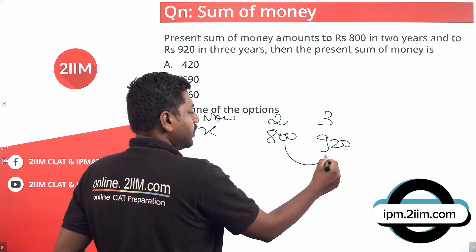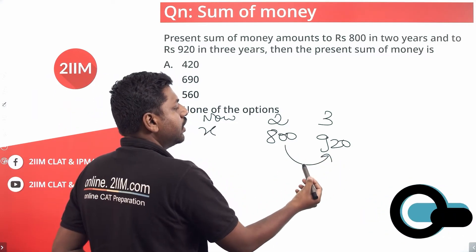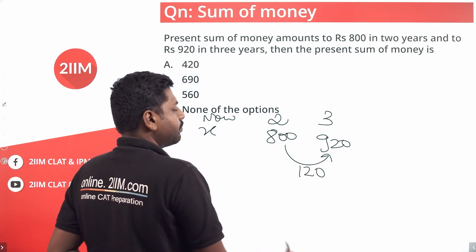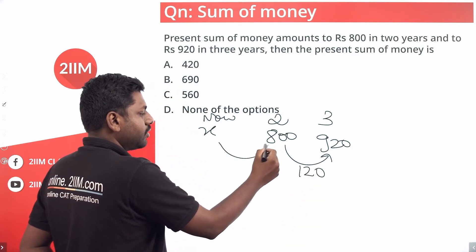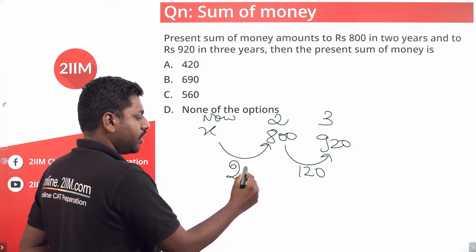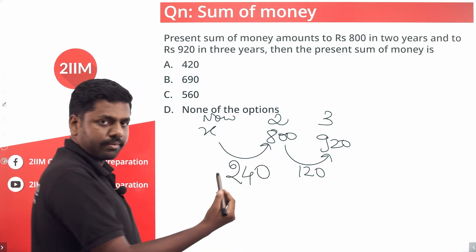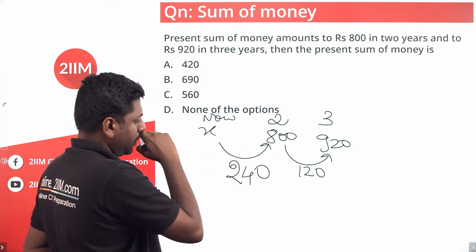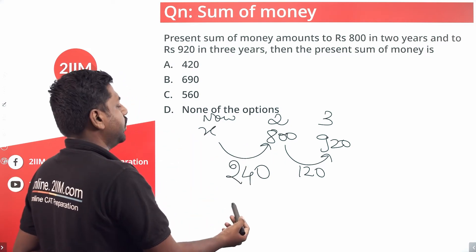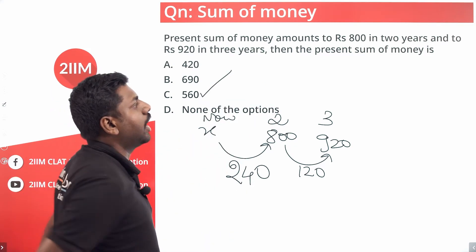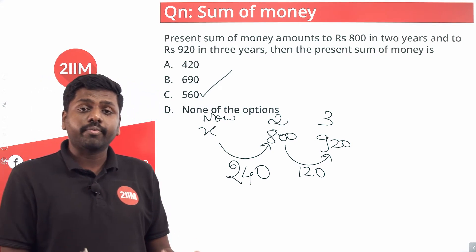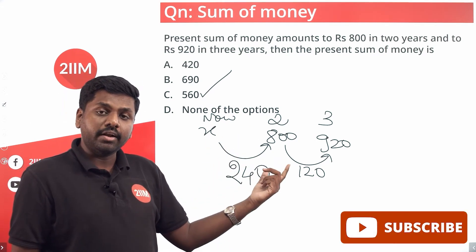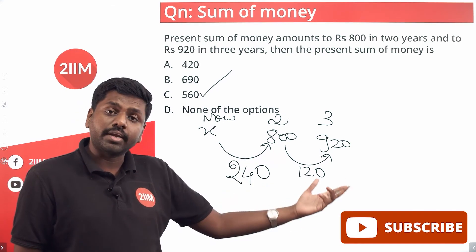The interest gained in year three is 120, which means over two years, 240 was gained. So 800 minus 240: 800 minus 200 is 600, minus another 40 is 560. So 560 is your answer — the present sum of money. In two years it becomes 800, and then in one more year it becomes 920.